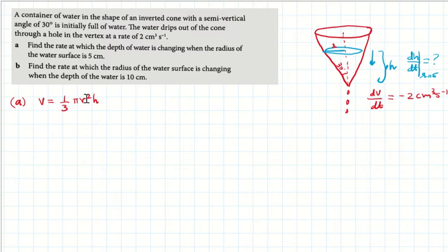We will use the semi-vertical angle. Using tan(30°) = r/h, substitute tan(30°) = 1/√3 = r/h. So r = h/√3.